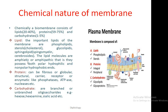Protein molecules also possess both polar and non-polar side chains. Usually their polar hydrophilic linkages are towards the outer side, while the non-polar hydrophobic linkages are either kept folded inside or used to establish connections with the hydrophobic part of the lipids. These proteins can be fibrous or globular, structural, carrier, receptor, or enzymatic — like phosphatase, ATPase, and nucleases. For carbohydrates, there are two types: branched or unbranched oligosaccharides like hexose, hexosamine, and sialic acids. This is a typical representation of a biomembrane containing protein, lipid, and carbohydrate parts.